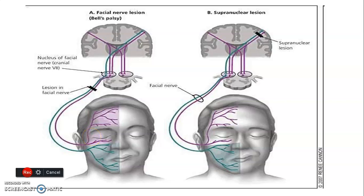Continuing with our cranial nerve series, we left off at facial nerve palsy where we discussed upper motor neuron and lower motor neuron lesions. Lower motor neurons begin from the motor nucleus of the facial nerve in the brainstem, while upper motor neurons control the facial nerve from above.